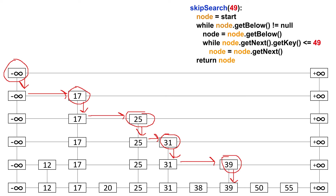We can't go forward anymore, so we try to drop down again. But we can't drop down anymore. As I said, if you can't drop down anymore, that means you're at the node that you're trying to find. We're not trying to find 39, but we return this node because it's the largest node less than or equal to 49. That's always the node we're going to return.